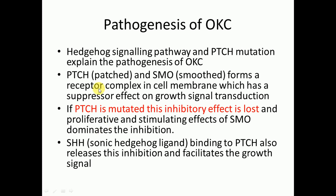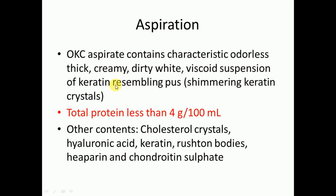The hedgehog signaling pathway and PTCH mutation explain the pathogenesis of OKC. PTCH and SMO form a receptor complex in the cell membrane with a suppressor effect on a growth signal transduction. If PTCH is mutated, this inhibitory effect is lost and the proliferative and stimulating effect of SMO dominates. Sonic hedgehog (SHH) ligand binding to PTCH also releases this inhibition and facilitates growth signals.